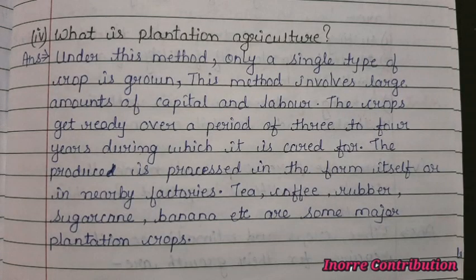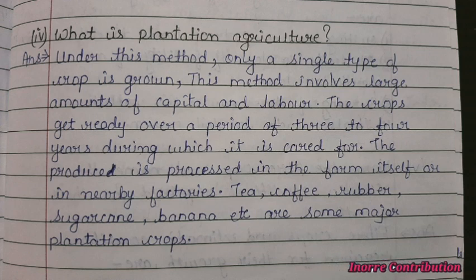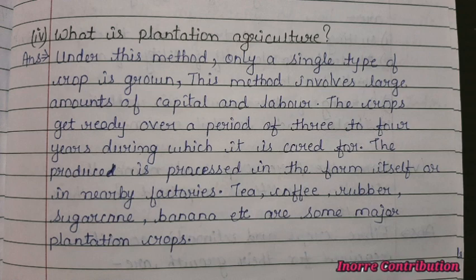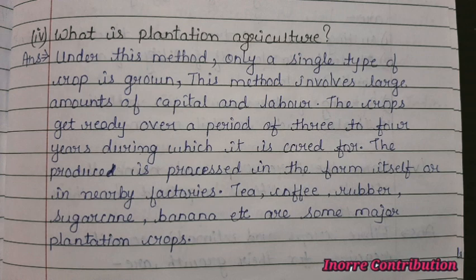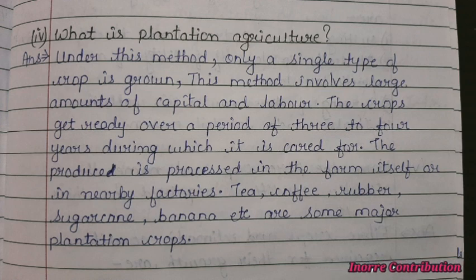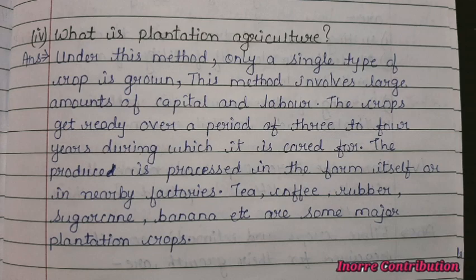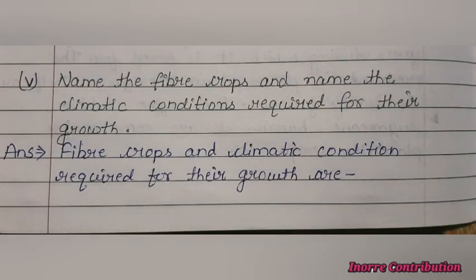Next question: What is plantation agriculture? Under this method, only a single type of crop is grown. This method involves a large amount of capital and labor. The crops get ready over a period of three to four years, during which they are cared for. The produce is processed in the farm itself or in nearby factories. Tea, coffee, rubber, sugarcane, and banana are some major plantation crops.